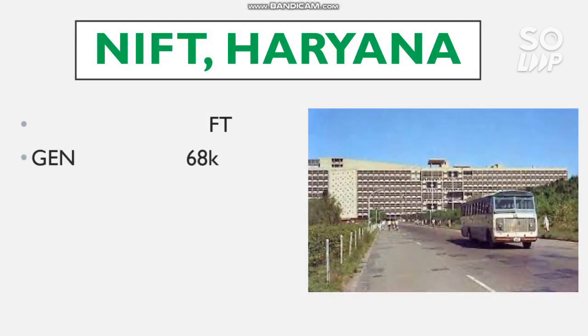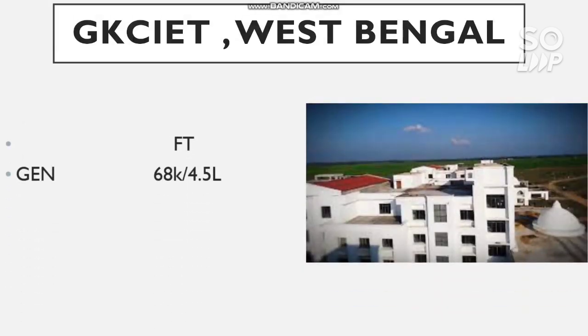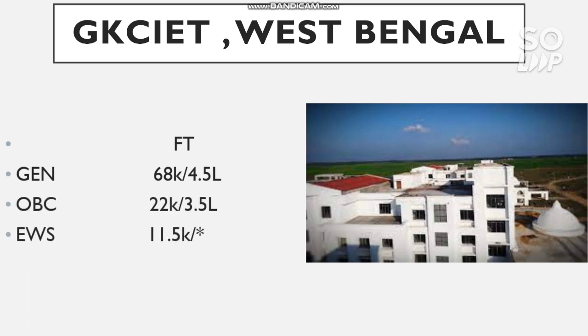The next is NIFTEM Haryana, which also has only one branch - Food Technology. For General it is 68,000, OBC is 22,000, EWS is 11,500, SC is 13,500, and ST is 6,900. The next is GKCIET West Bengal, which also has Food Technology available. General cutoff is 68,000 for other state and 4.5 lakh for home state - so if you are from home state you can get in at 60-65 percentile. OBC other state is 22,000, EWS is 11,500, SC is 13,500, and ST is 6,500.